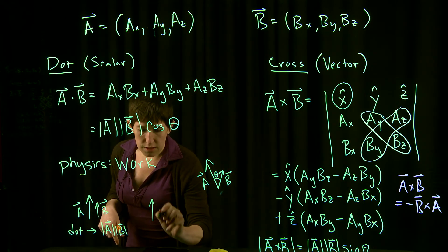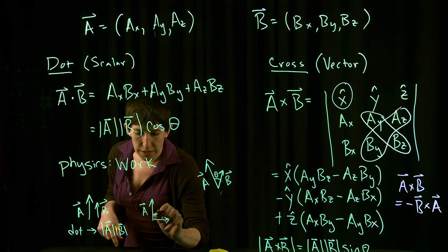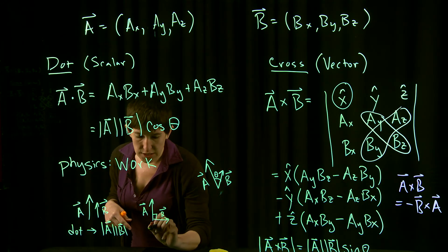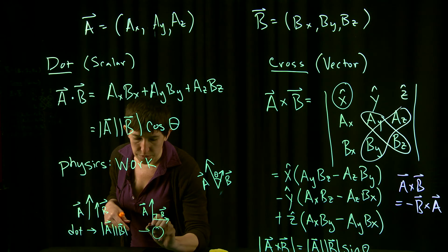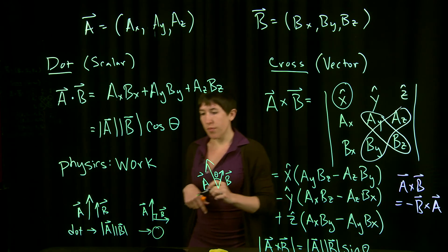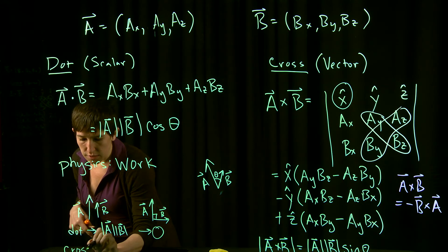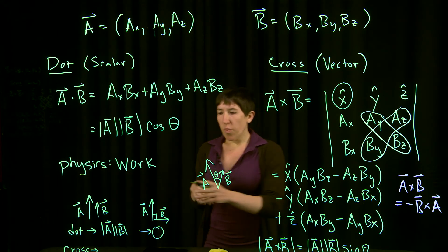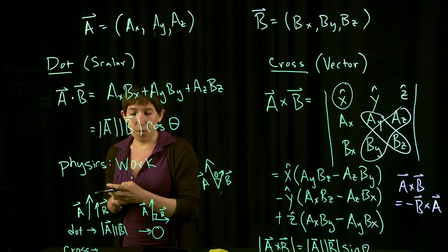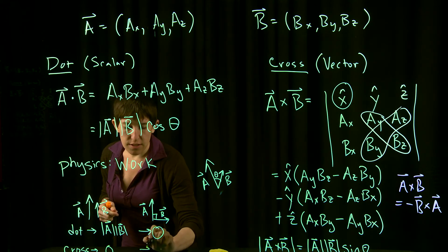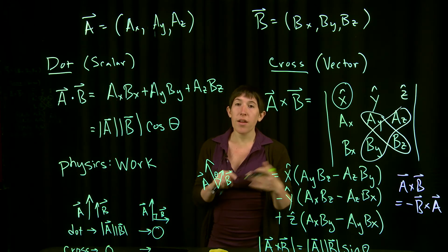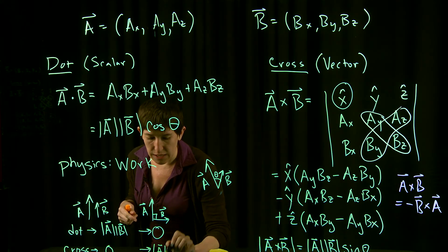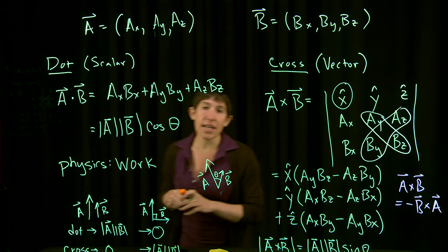If A and B are perpendicular, cos(90°) equals zero, so the dot product goes to zero. On the other hand, the cross product depends on sine. When the angle is zero and they're parallel, the cross product vanishes. But when the vectors are perpendicular, sin(90°) equals one, so the magnitude is maximized and you get |A| times |B|.